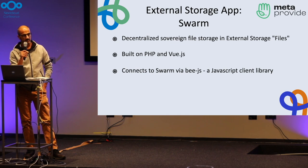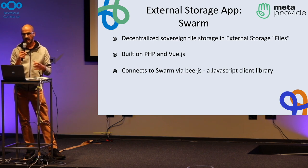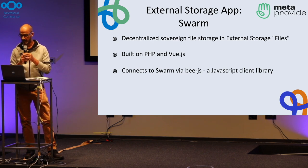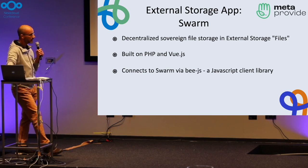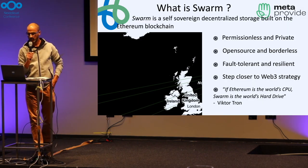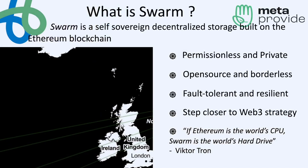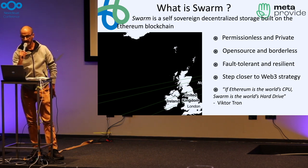It's built on PHP with a Vue JavaScript front end, and we've really worked to seamlessly integrate that into what exists today for file storage. We connect to the Swarm bee nodes via the FairOS Swarm client library, which is all open source. Swarm can be defined as a self-sovereign, decentralized storage built on the Ethereum blockchain. It's a viable alternative to Google Drive, Dropbox, and other mainstream centralized storages.